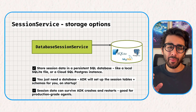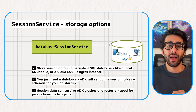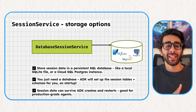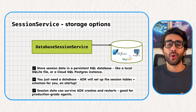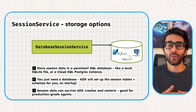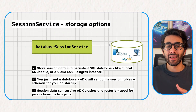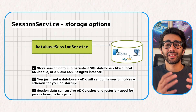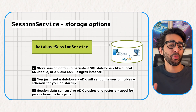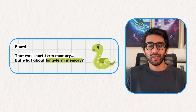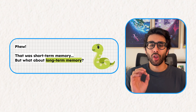One way to solve this challenge is by introducing a database to store session data. ADK actually comes with a database session service that gives you this exact functionality. With this, you can store session data in a persistent SQL database like a local SQLite file or a Cloud SQL Postgres instance. ADK will set up the session tables and schemas for you on startup, and session data can survive ADK crashes and restarts — it's good for production-grade agents. But at the end, this is still just managed session data.